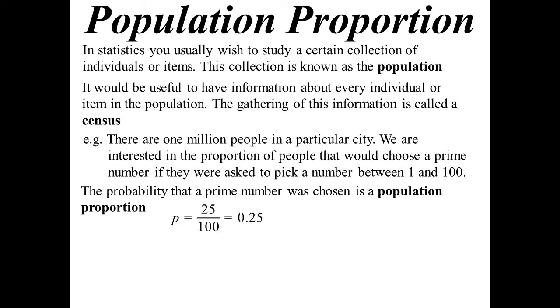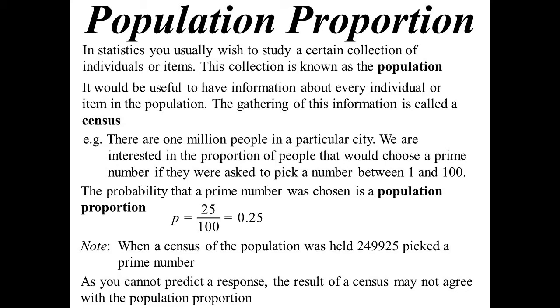So for us, there are 25 prime numbers less than 100. So it would be 25 out of 100, 0.25. However, that doesn't mean that when you hold a census, 0.25 will come back as that ratio. Because you can't predict what someone's going to pick. So theoretically, it should be 0.25. When I did a simulation where I got my spreadsheet to crunch out a million numbers below 100, it actually turned out that 249,925 of them were prime numbers. So in reality, you still might not get that population proportion.